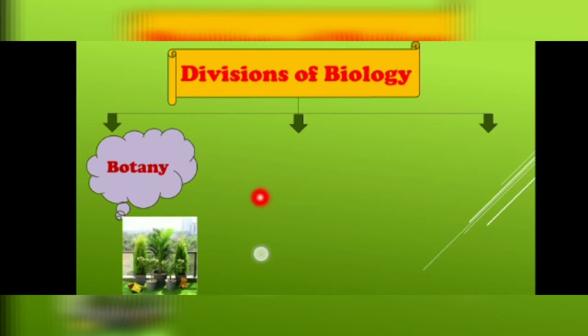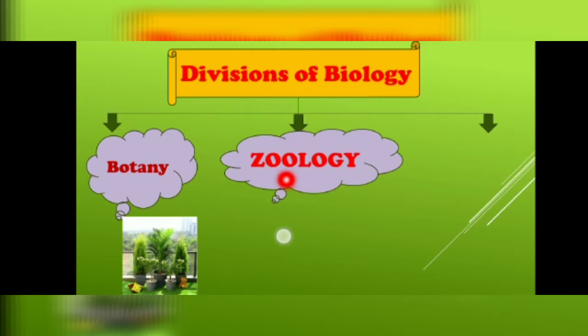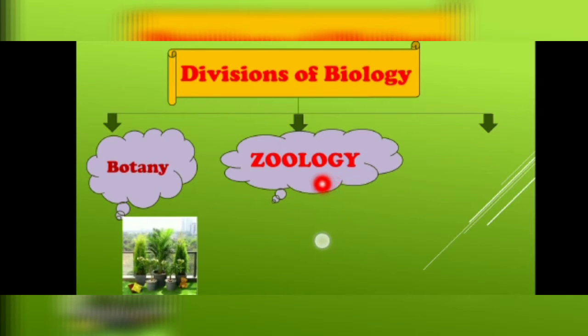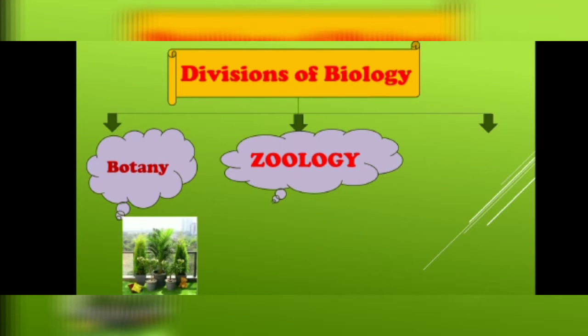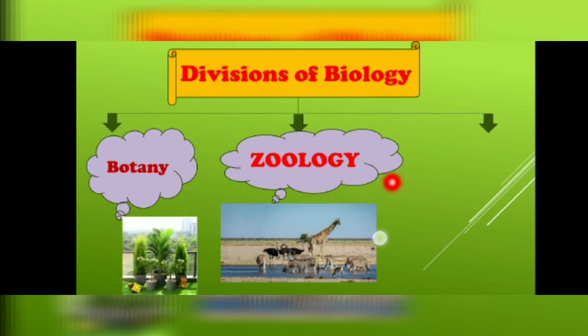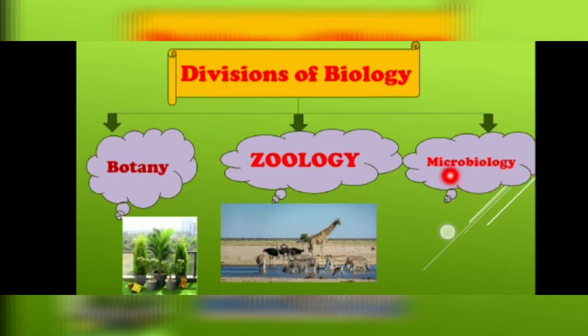When you study about plants and the life processes occurring in plants — for example, photosynthesis — it will be included in botany. The next division of biology is zoology. 'Zoo' means animals and 'logy' means study, so the study of animals is known as zoology. When you study about different animals, for example cats, dogs, and zebras, it will be included in zoology.